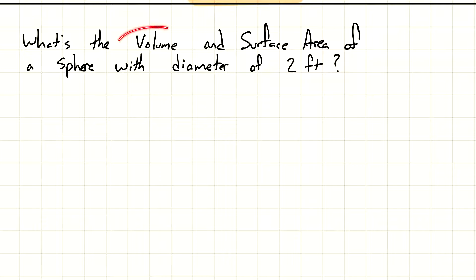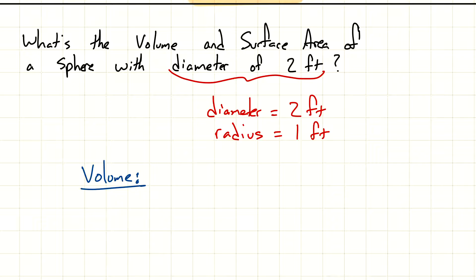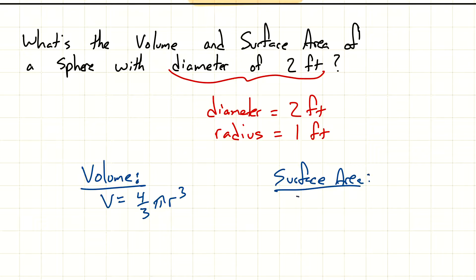Right away I know I'm going to use this information. Diameter equals two feet — but I don't want the diameter, I want the radius. So radius equals one foot. That's enough information to figure out the volume. Volume is four-thirds pi r cubed, and surface area is four pi r squared. Just in case you need those formulas.